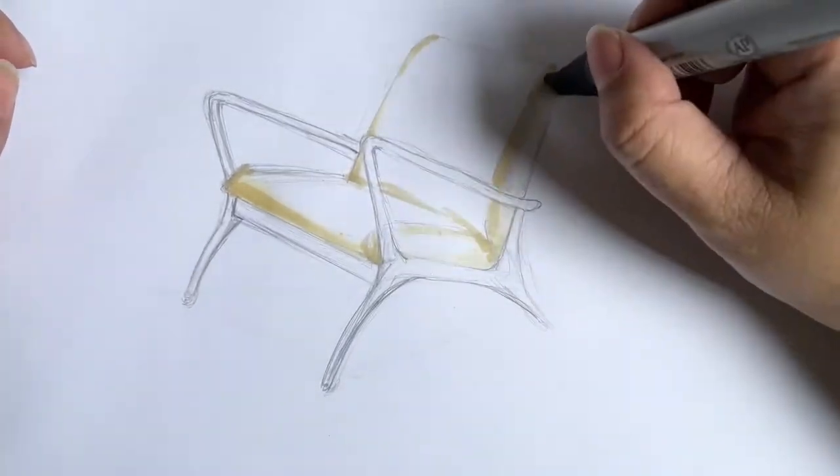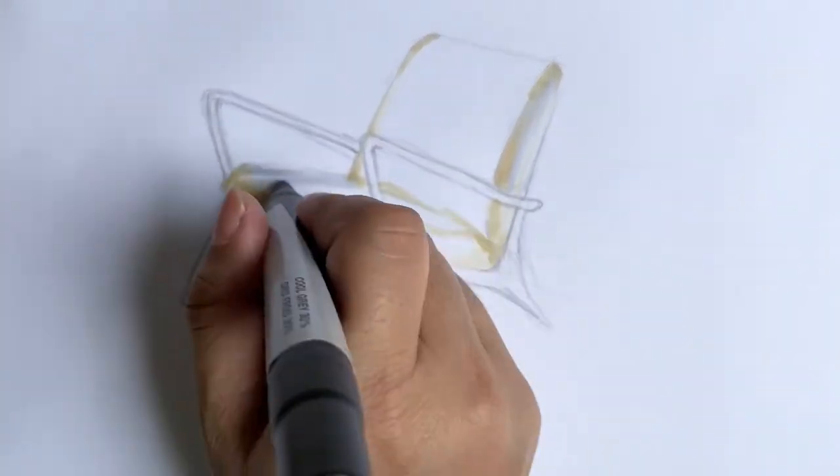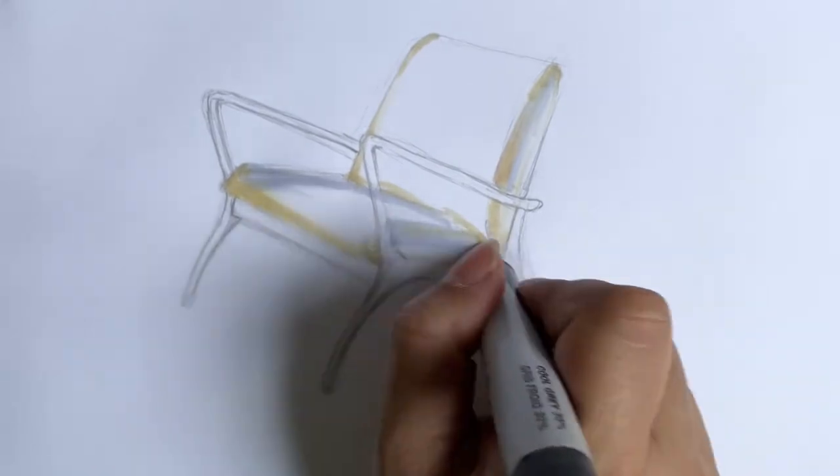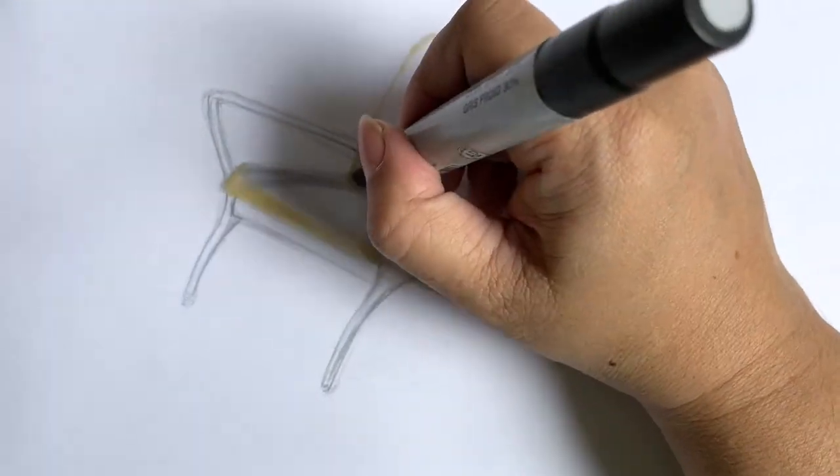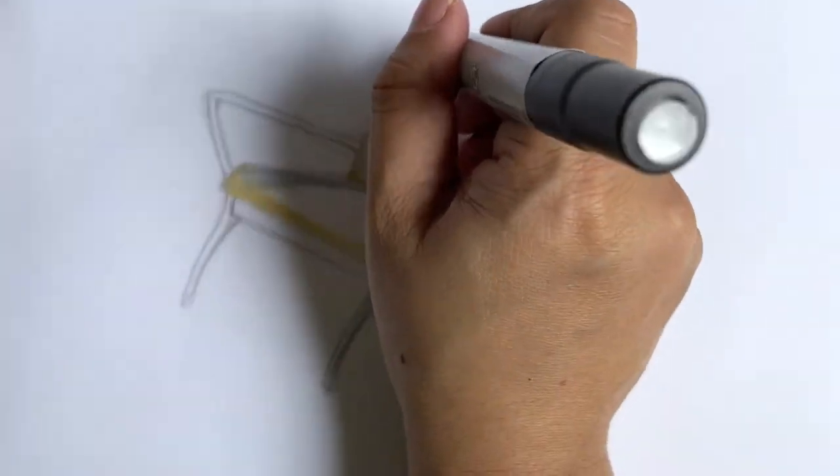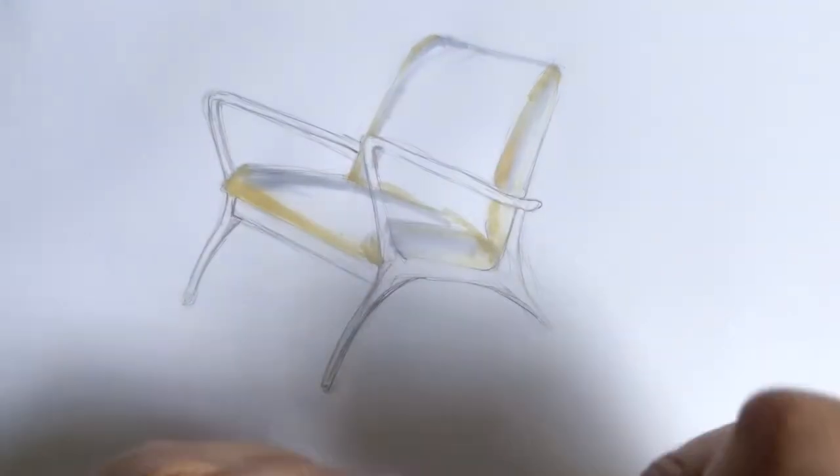Now I'm going to go ahead and layer it with some cool gray to give it some kind of shadow, like where it's going to be, so it has an illusion of depth and volume here. Now I'm not going to put it everywhere, but I'm going to put it in some places. Now this is where your markers that are kind of dead come into play.